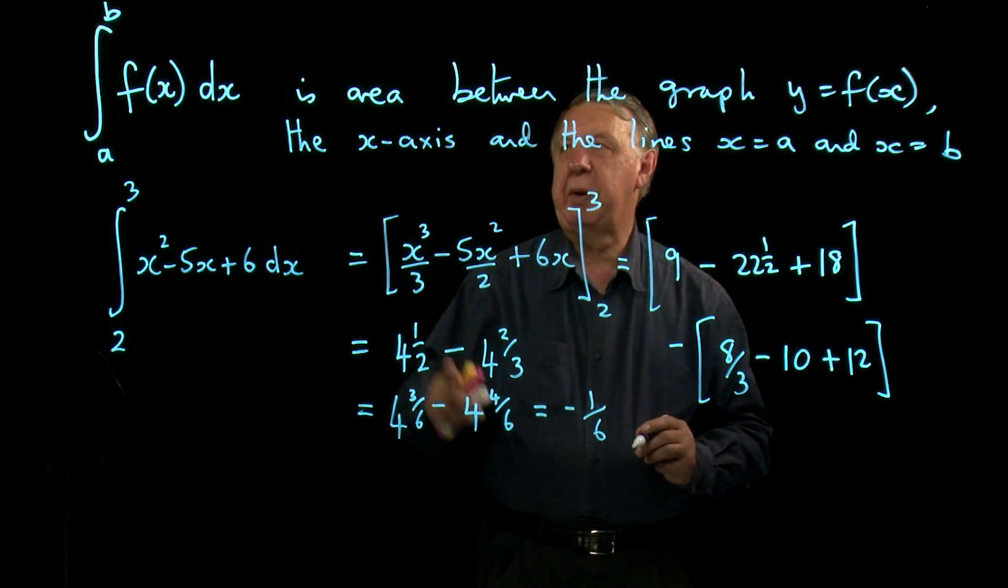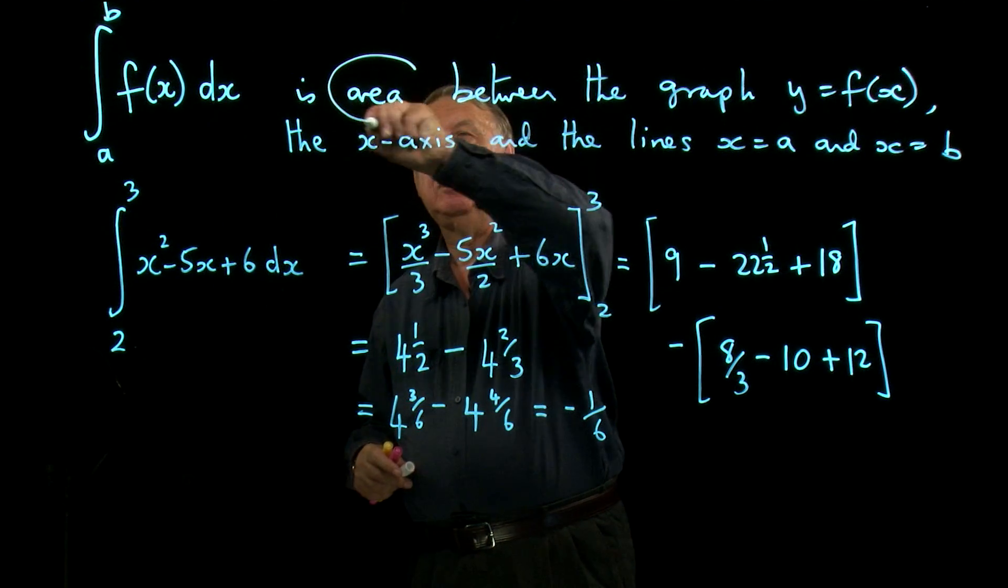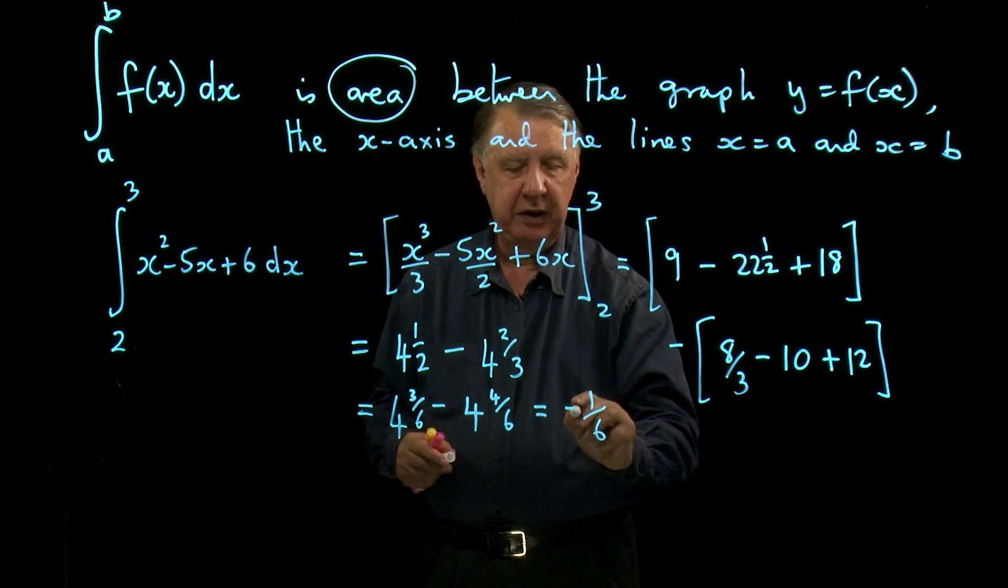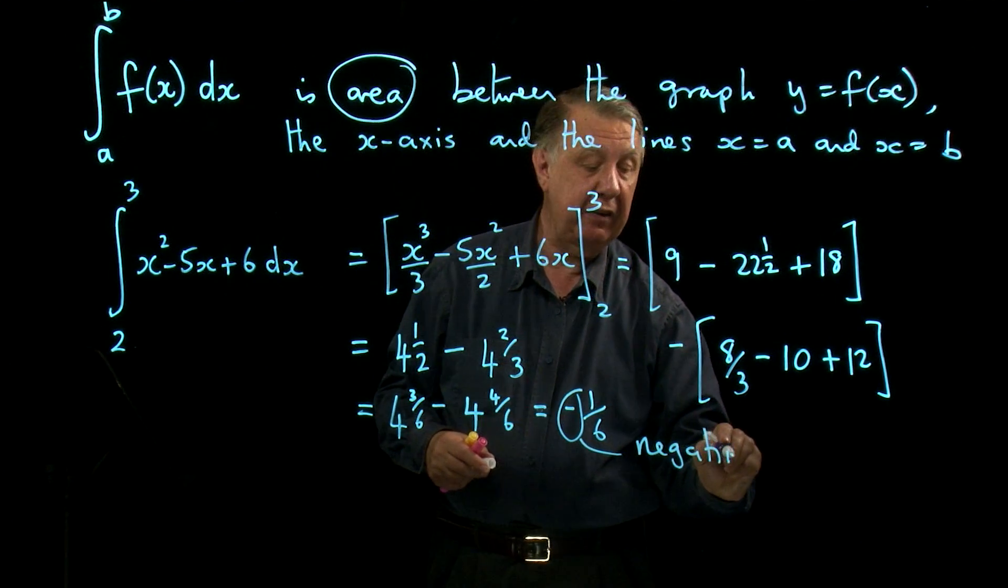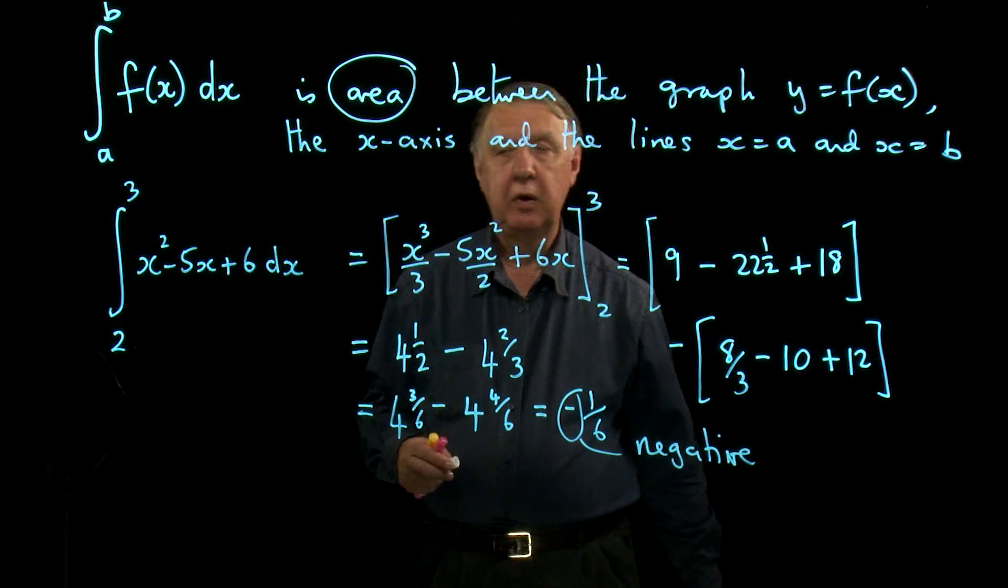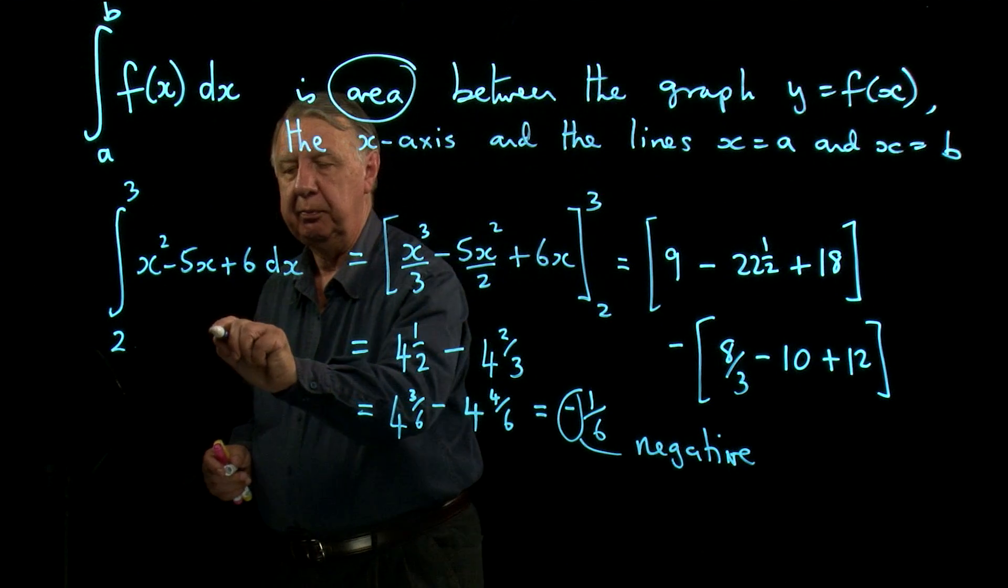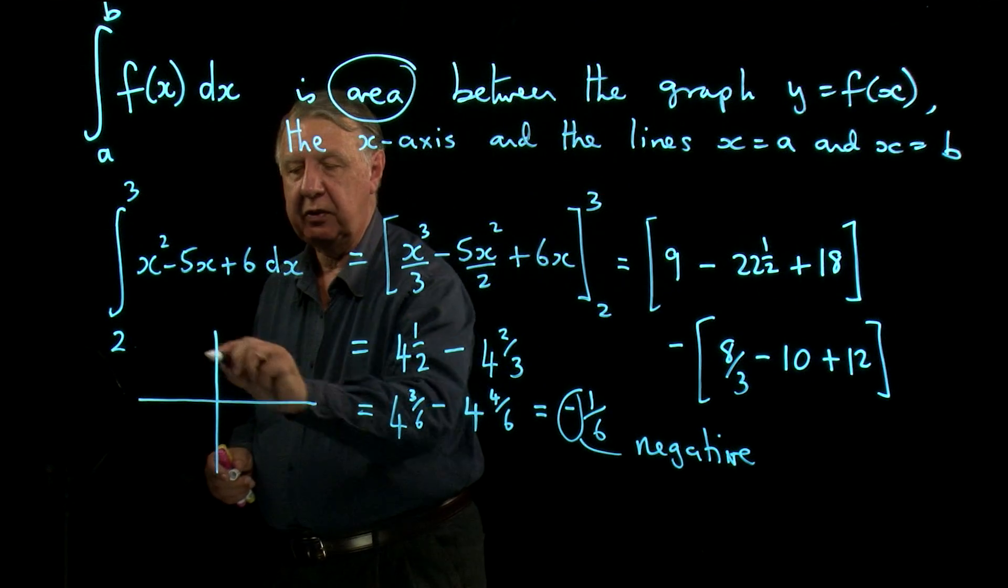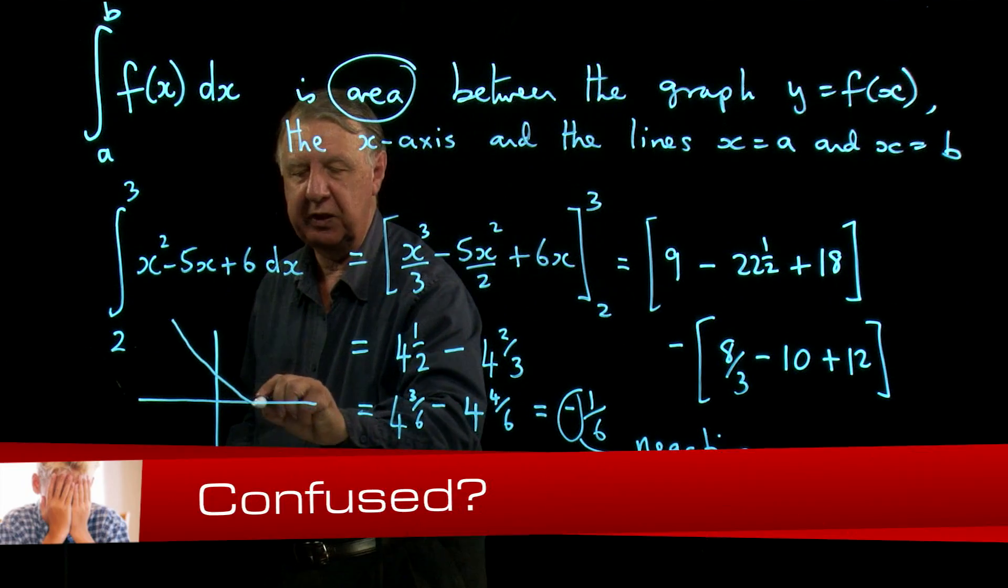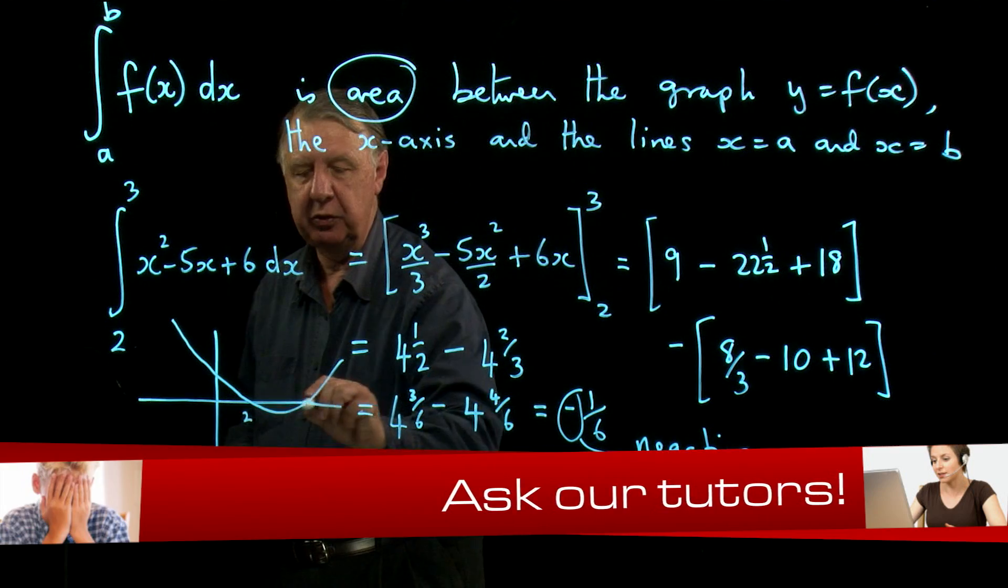Now up here I said this gives me the area. Down here I've got a negative. How can I have a negative area? Well, look at the graph. If we sketch this graph, it's a very well-known quadratic that we've worked with loads of times, it goes through 2 and 3.